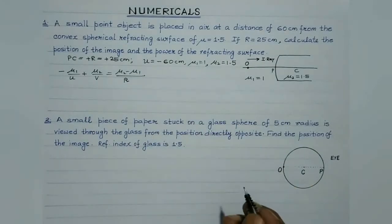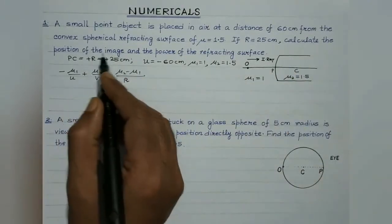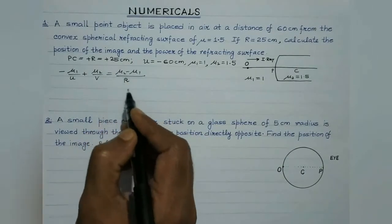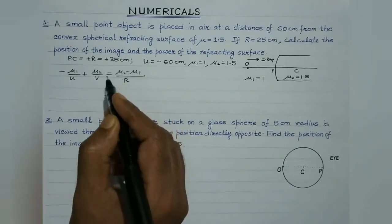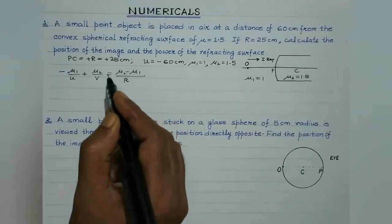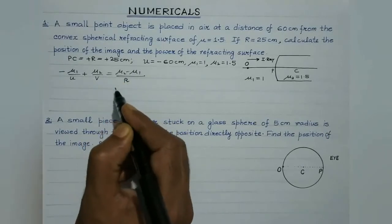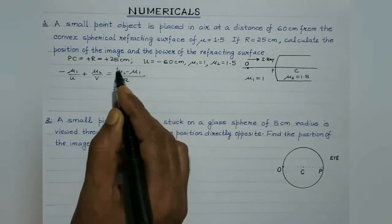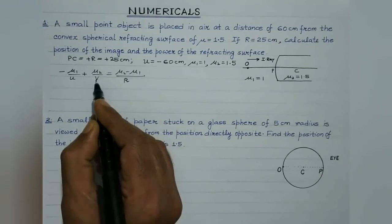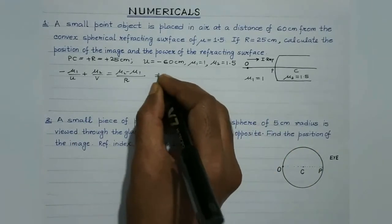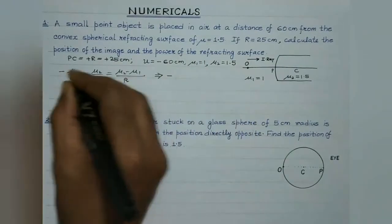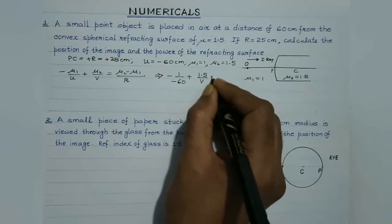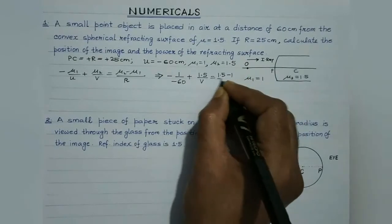The most important point is that the point object is placed in air, that is the rarer medium. So whenever the object is placed in the rarer medium, the formula to be used is: minus mu1 over u plus mu2 over v equals mu2 minus mu1 by r. We are supposed to calculate the position of the image, that is v is to be found, and the power of the refracting surface. So let's substitute the values: minus mu1 is 1, u is minus 60, plus mu2 is 1.5 divided by v equals 1.5 minus 1 divided by 25.